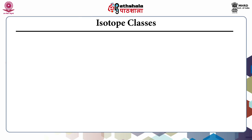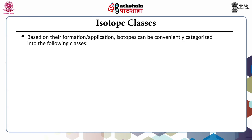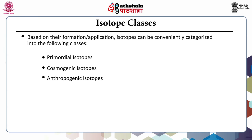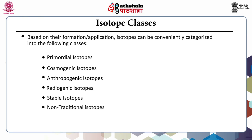There are several classes of isotopes. Based on their formation or application, isotopes can be categorized into several classes. These classes include primordial isotopes, cosmogenic isotopes, anthropogenic isotopes, radiogenic isotopes, stable isotopes, and non-traditional isotopes.